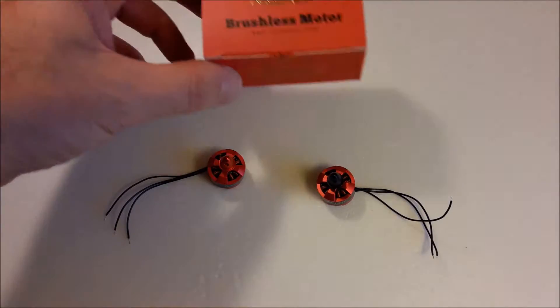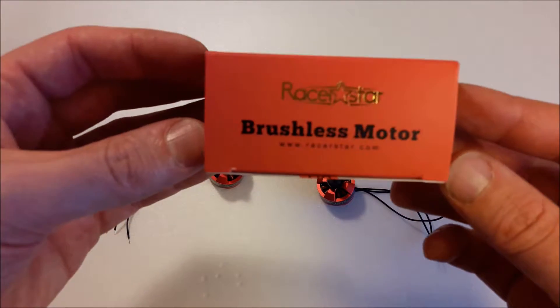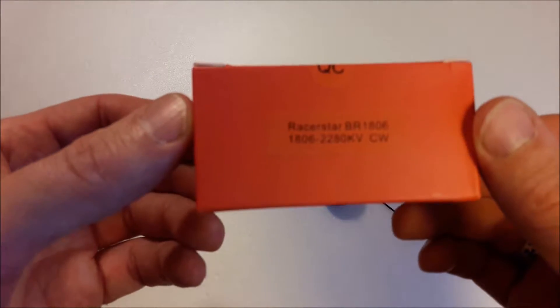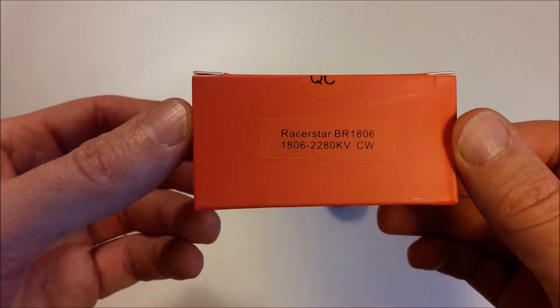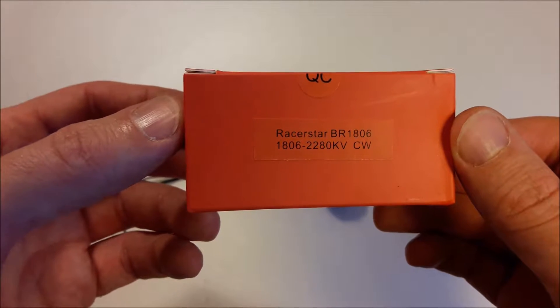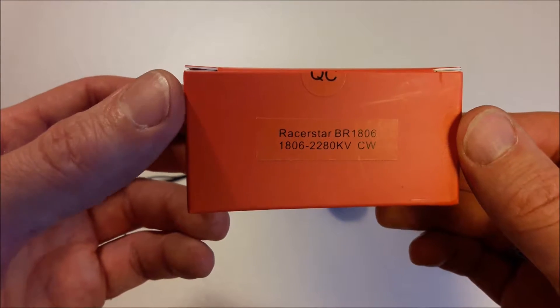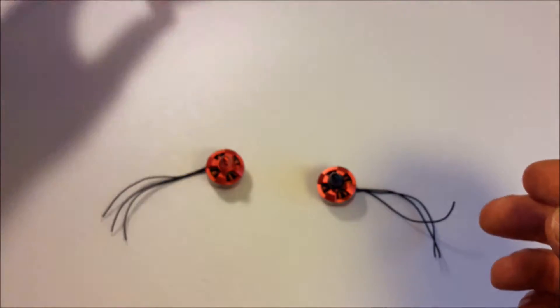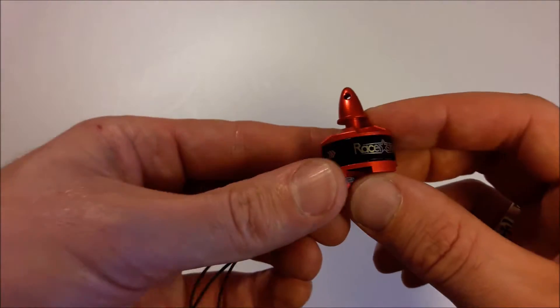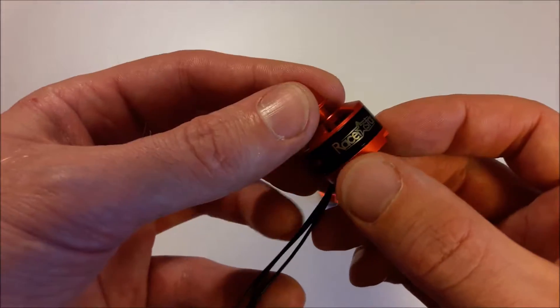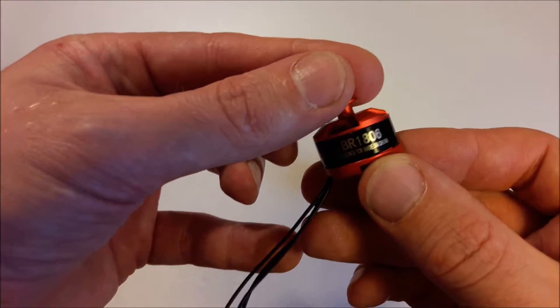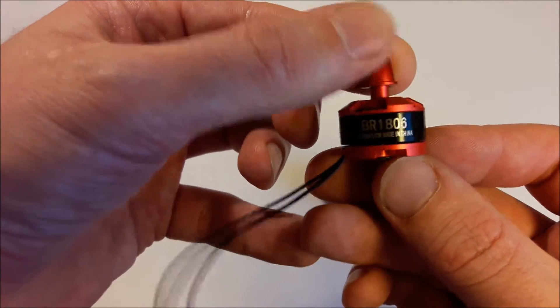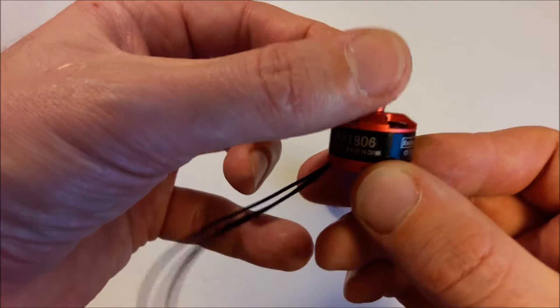Hello, let's take a look at the Racerstar motors 1806 2280KV. They come in a red box and the motors also have a red anodized color, which I like.